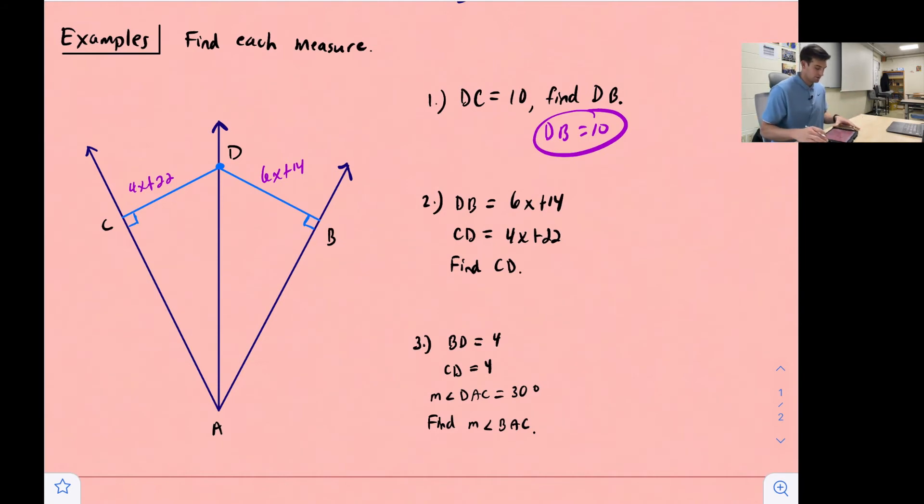Once again we know these two segments are equal to each other, so we can set these two equations equal to each other, and we can solve for x. And once we solve for x, we can plug that into x in really either equation because they are equal. So let's say we want to subtract 4x, and we get 2x plus 14 equals 22. Let's take away 14 from both sides, 2x equals 8, divide by 2, and we get x equals 4.